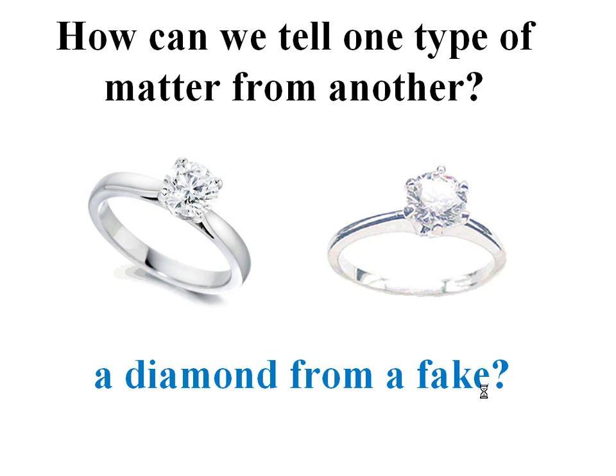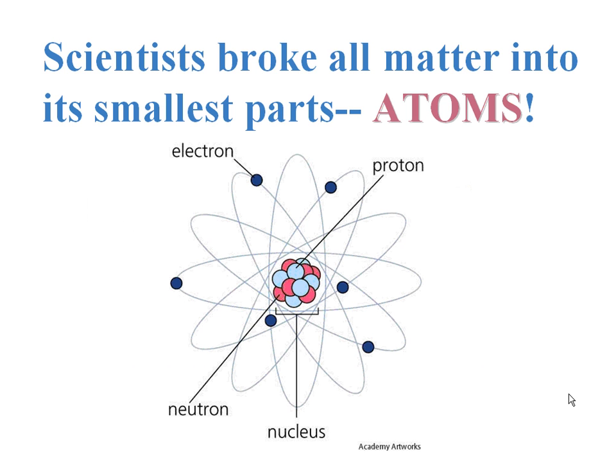Maybe some jewelers are out there that can do it by sight, but normally they've got to run certain tests. So, scientists, we look at stuff and we want to break it into nice groups. In order to put it into its groups, sometimes we have to look at its smallest parts, which would be the atom.